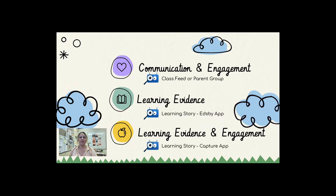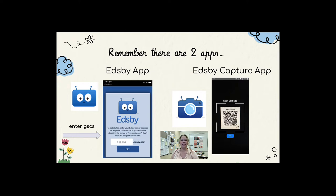Remember that there are two Edsby apps. The Edsby app is used by teachers and parents to log into Edsby on their phone or iPad — it is a mobile-friendly version of the desktop application. Teachers can use it to take attendance, reply to messages, and more. Parents use it to enter absence information, sign up for three-way conferences, reply to messages, and see the river of news for the school. The Edsby Capture app is used only for capturing learning evidence for one student at a time. The user must have a QR code to scan, and they then only have access to a camera. There are no other features within this app.